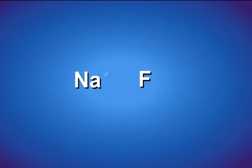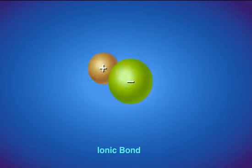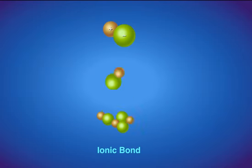Sodium has one valence electron, and fluorine has seven valence electrons. If the one valence electron of sodium is transferred to fluorine, both atoms achieve an octet of electrons. By losing one electron, sodium has a plus one charge. By gaining one electron, fluorine has a negative one charge. An ionic bond is the electrostatic force that holds ions together in ionic compounds.